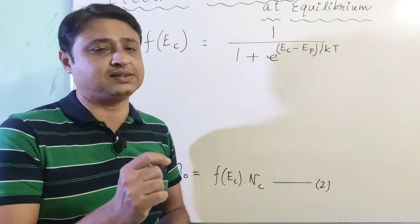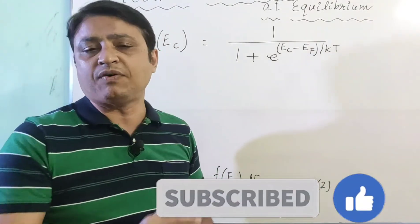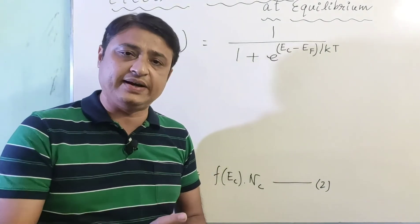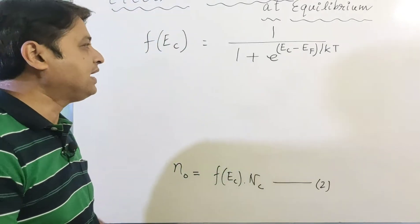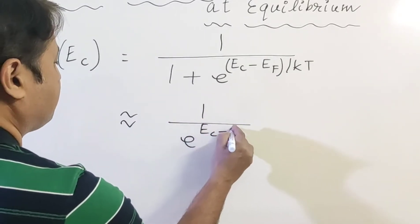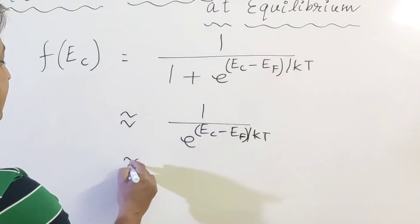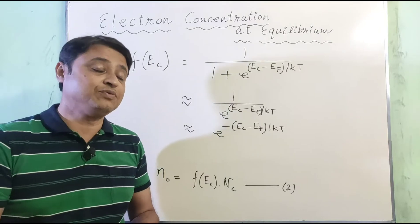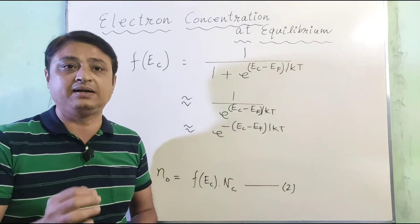For a semiconductor, the conduction band lies above the Fermi level Ef. Since Ec - Ef is much greater than kT at room temperature, we can approximate f(Ec) as 1 / e^((Ec-Ef)/kT). Neglecting 1 in the denominator, this becomes e^(-(Ec-Ef)/kT). This is the probability of occupancy at the conduction band edge Ec.